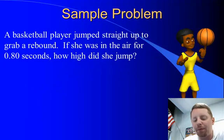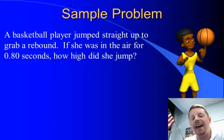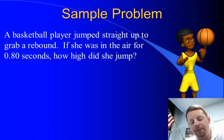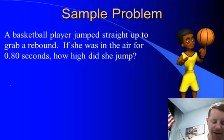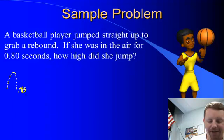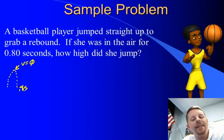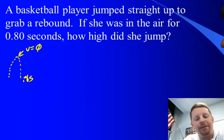A basketball player jumps straight up to grab a rebound. If she was in the air for 0.8 seconds, how high did she jump? Our basketball player jumps up and comes back down, and she was in the air for 0.8 seconds. What will make this problem easier is realizing that at her peak, her velocity was zero — that gives us one more piece of information.